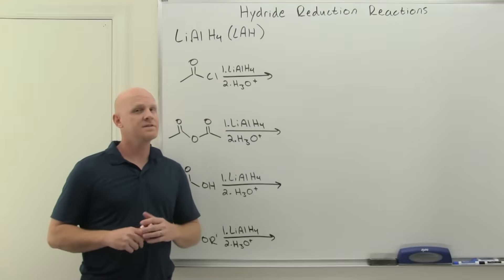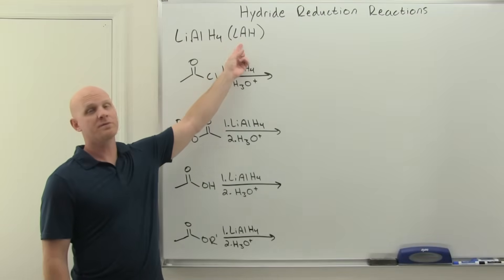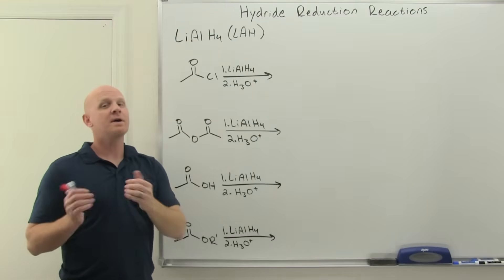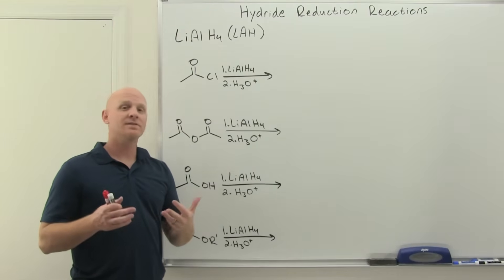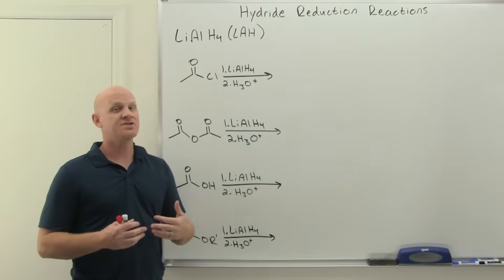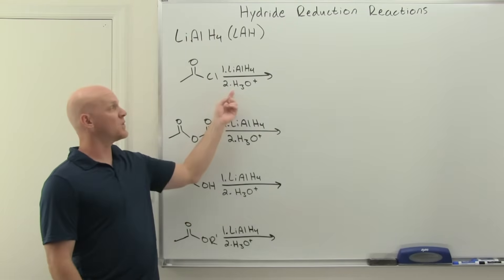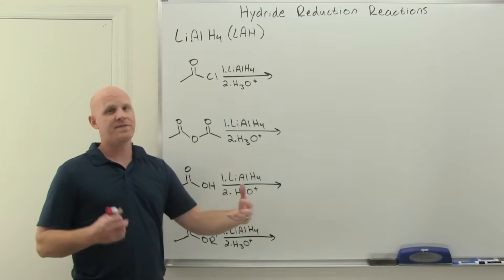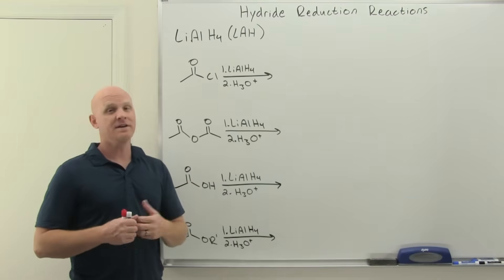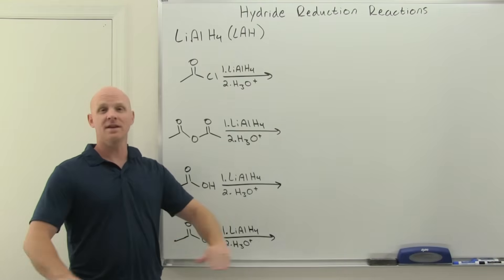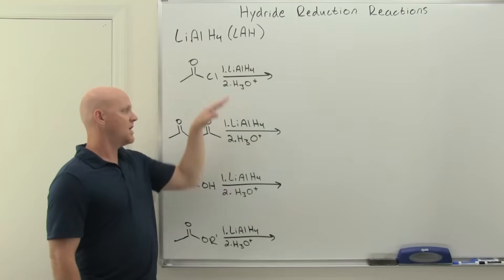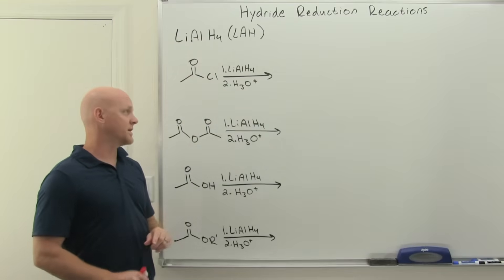Now let's talk about lithium aluminum hydride, sometimes abbreviated as LAH. Lithium aluminum hydride is much more reactive, and you can't use it with protic solvents — so you have to carry out these reactions in aprotic solvents, which is why it's going to require an acid workup step. With sodium borohydride we had the option of protic or aprotic solvents, but with LAH you always need that second acid workup step.